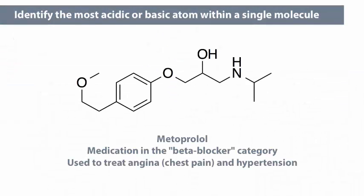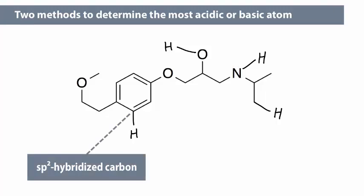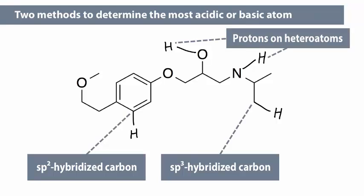In this video, you will learn to identify the most acidic or basic atom within a single molecule. First, we need to explicitly draw all the potentially acidic protons. I've explicitly drawn out a proton on an sp2 hybridized carbon and a proton on an sp3 hybridized carbon. There is a proton on oxygen and a proton on nitrogen. These are the main types of protons present in this molecule.